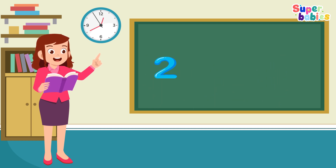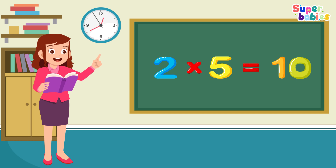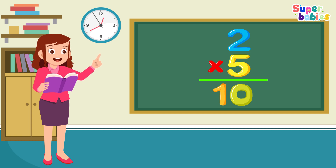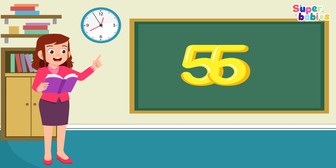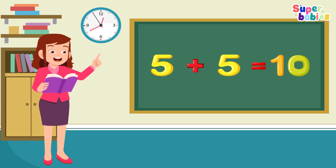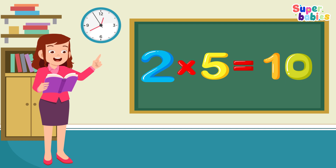Two times five equals ten. Two, five equals ten. One, two, five equals ten. Two times five equals ten.